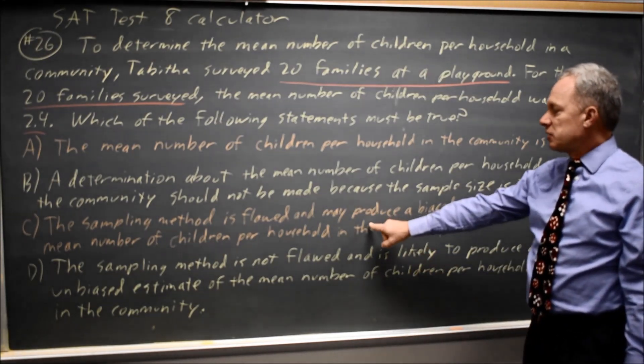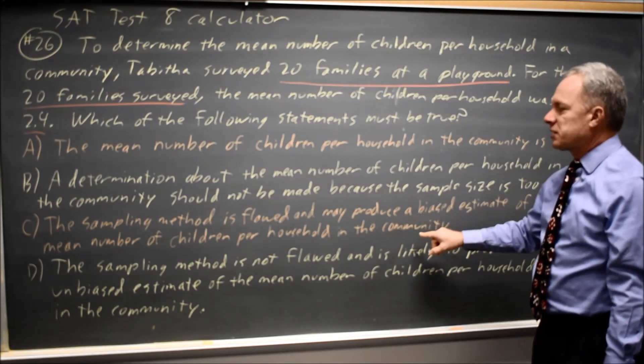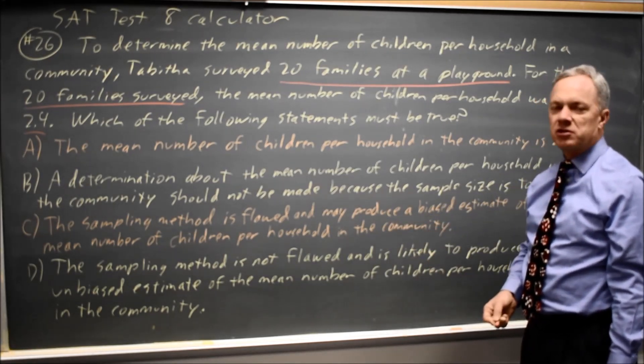Choice C: the sampling method is flawed and may produce a biased estimate of the mean number of children per household in the community.